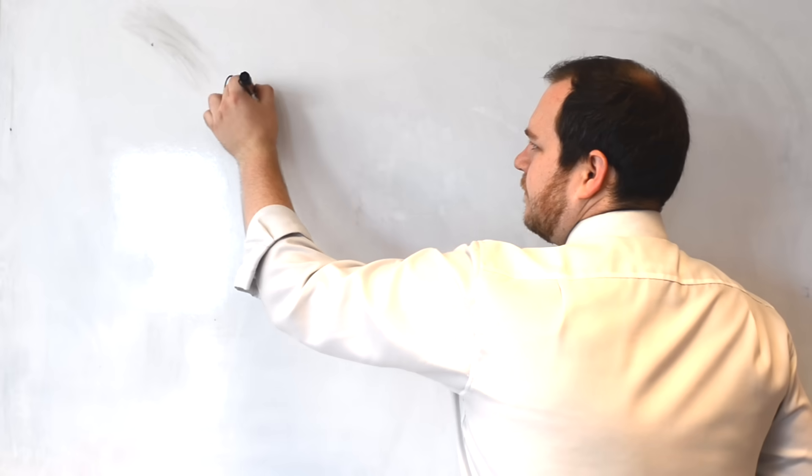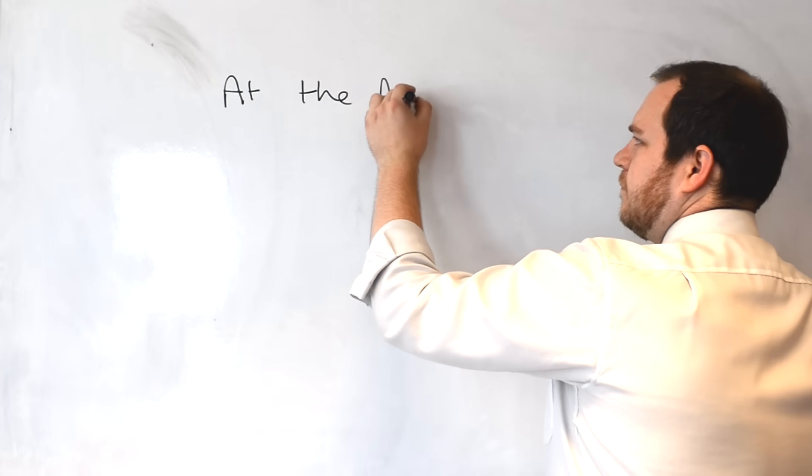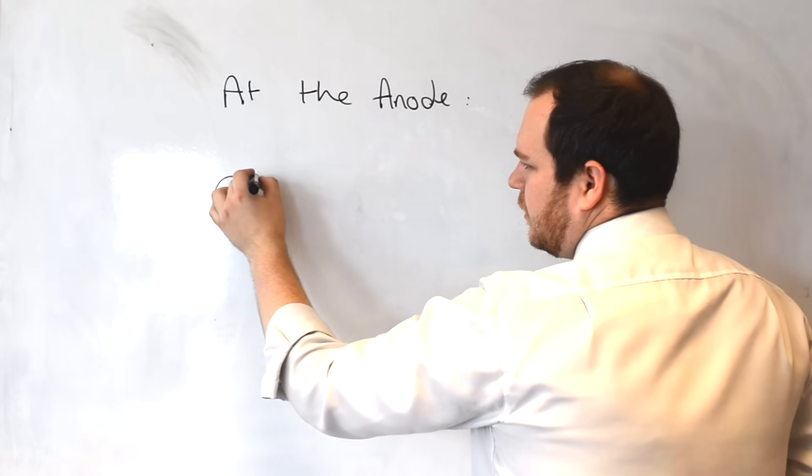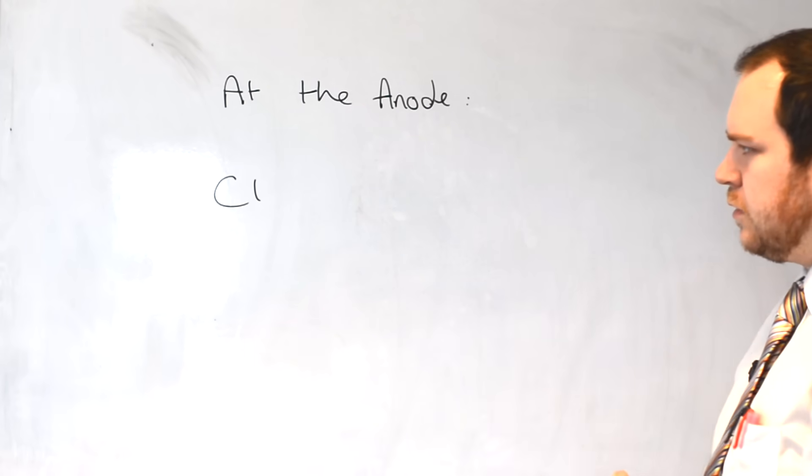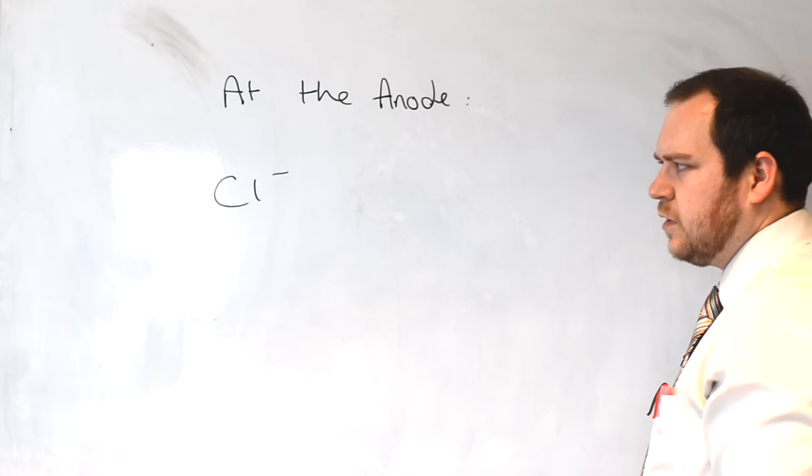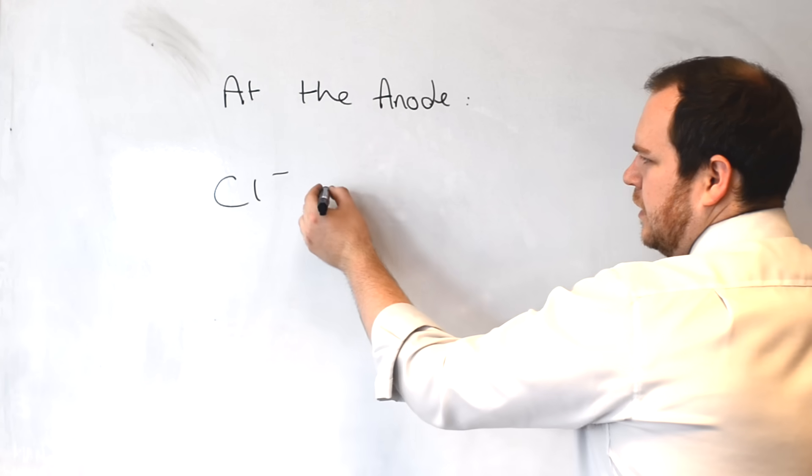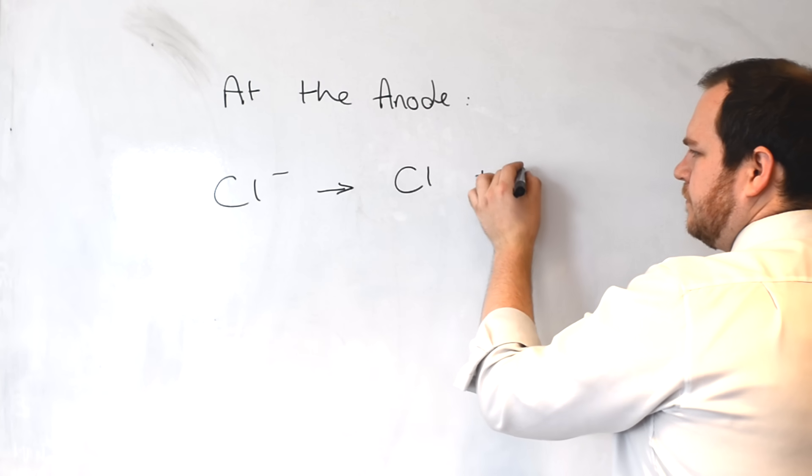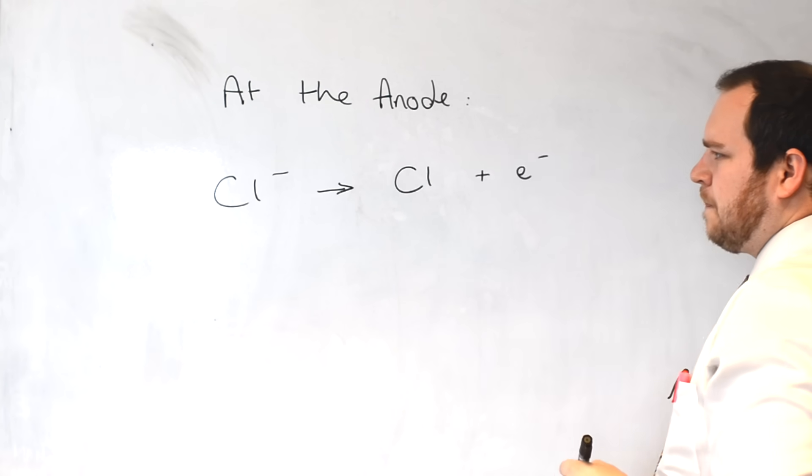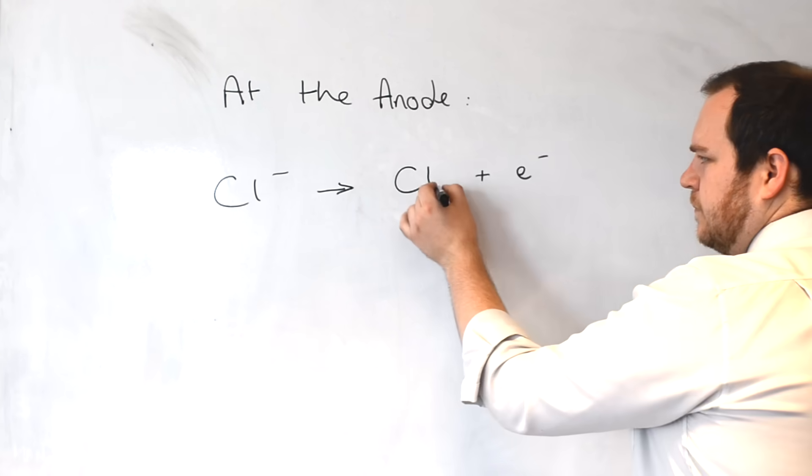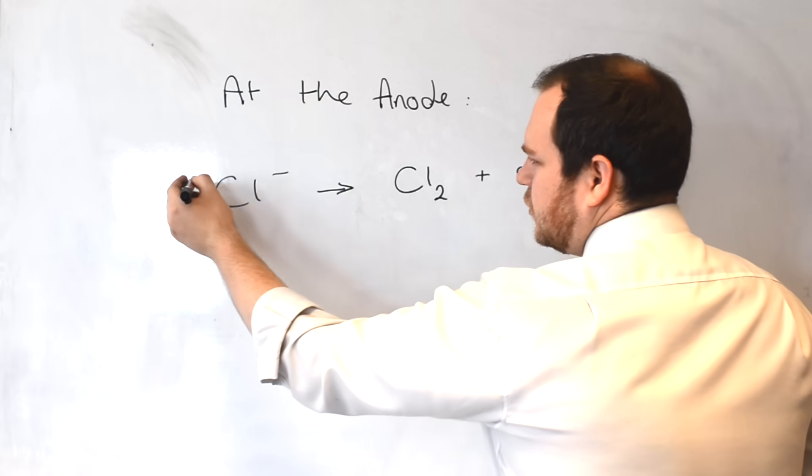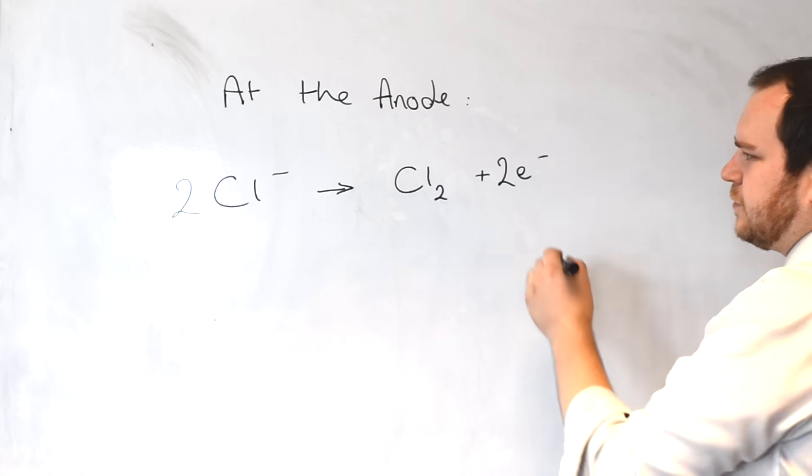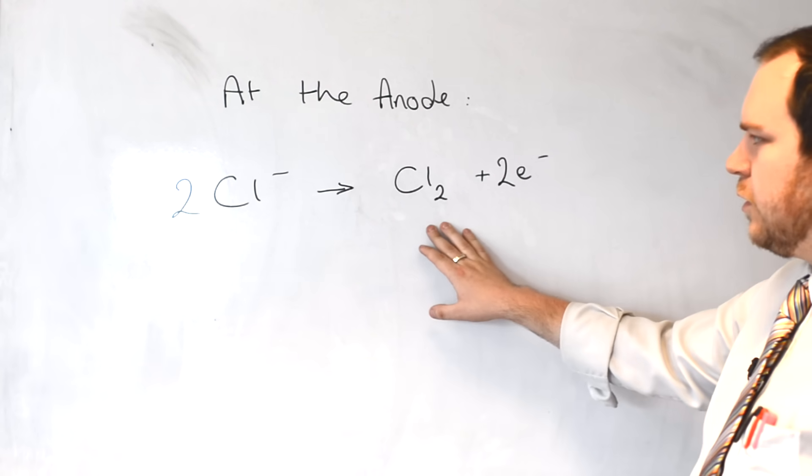At the anode, we will get chloride ions being attracted to that side. Chloride ions have a 1 minus charge and they will give up an electron. Chlorine travels around diatomically. In that case, we will need 2 chloride ions being attracted to the anode giving off 2 electrons to become a stable diatomic molecule.